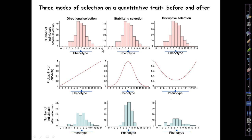What directional selection does to an initially normal distribution of trait values — assuming some of that variation is heritable — is to move the mean, in this case to the right toward larger phenotype values, and to reduce the variance somewhat. Some variance is eliminated by selection against one tail of the distribution, but the other tail, under the higher part of the selection gradient, is lifted up — those trait values become relatively more common as smaller trait values are diminished.